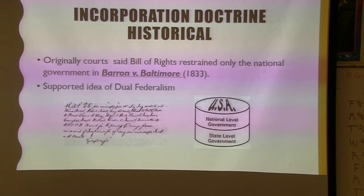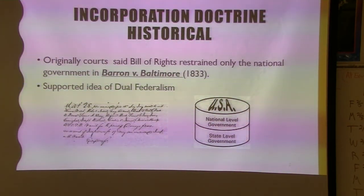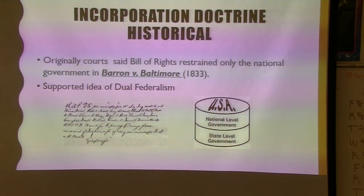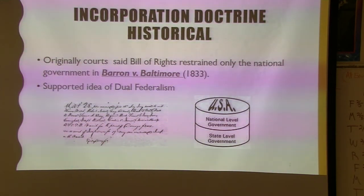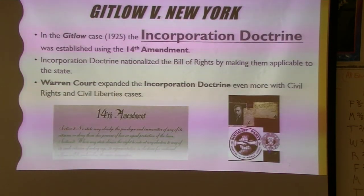A court case to know: Barron v. Baltimore set the standard for about 100 years until about 1932–33. This is where we have dual federalism — also called 'layer cake' federalism — which said there are two levels, like the different layers of a cake: state and national, without much in between. That standard held for over the first 100 to nearly 150 years of our country.